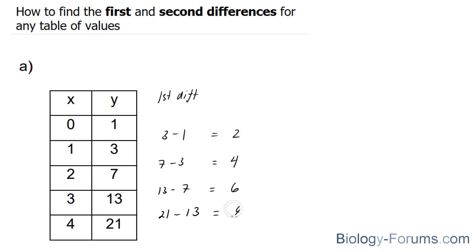Now, notice the first differences are not the same. Therefore, this is not a linear relationship. So we're going to create a fourth column called second differences.